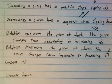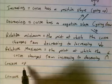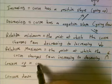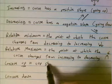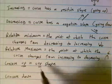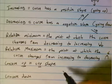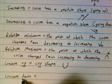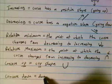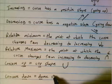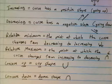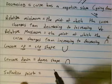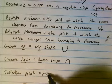Concave up — here's where the language itself helps us. That 'up' sounds like a cup shape. Concave down is a dome shape. And then the inflection point is just the point at which the curve changes concavity.